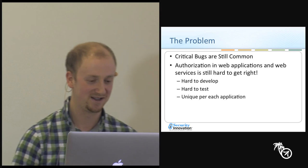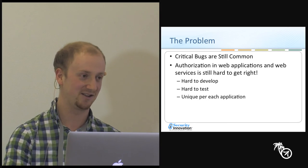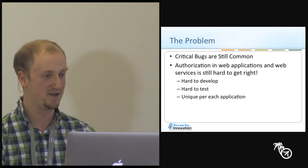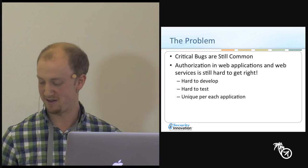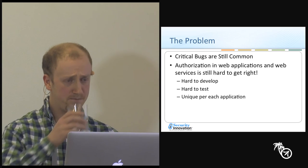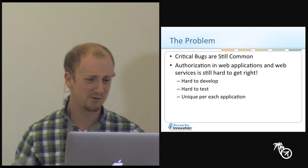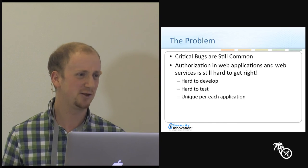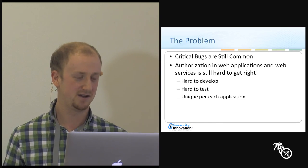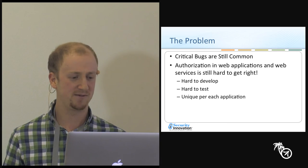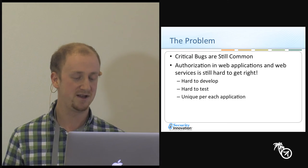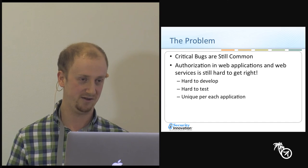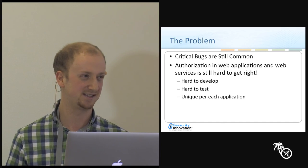So what's the problem? The problem is that critical bugs are still very common in web applications and web services. The ones I'm going to focus on today are the authorization bugs. The reason authorization is still so common is because it's still really hard to get right. It's hard to develop for, hard to test, takes a lot of time, and it's going to be specific to each unique application, which makes it hard to choose the right decisions up front in a generic way.